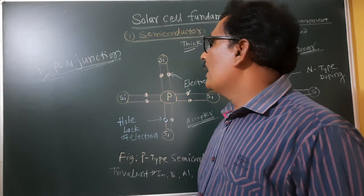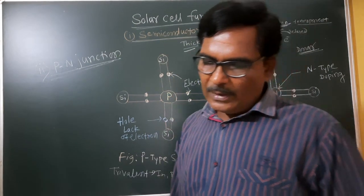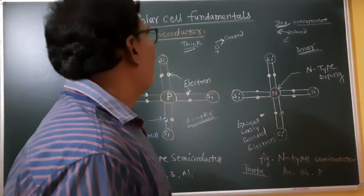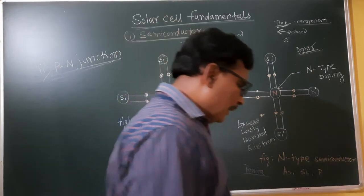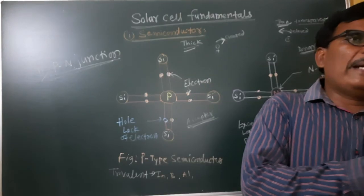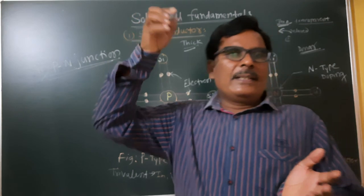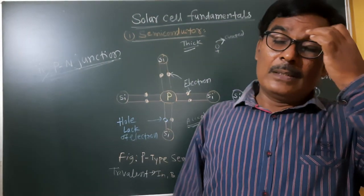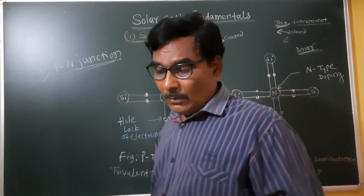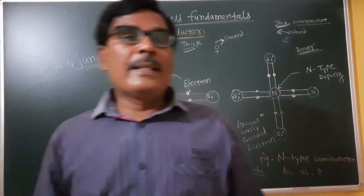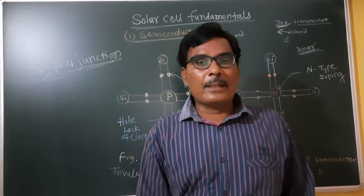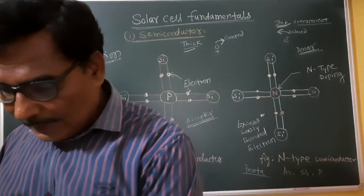P-type acts as an acceptor input and N-type acts as a donor input because excess electrons are released from the N-type semiconductor to the P-type semiconductor. When P and N are connected together, solar light energy is incident on the N-type junction, releasing electron-hole pairs. This creates a potential of about 0.5 volts, current of about 0.75 amperes, and power of 0.33 watts.